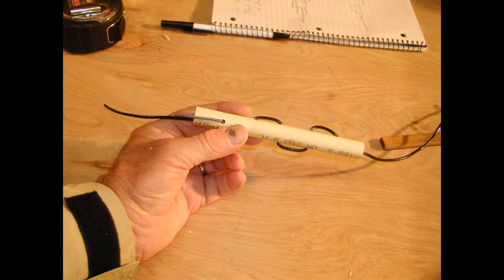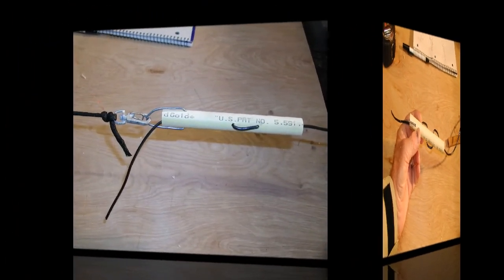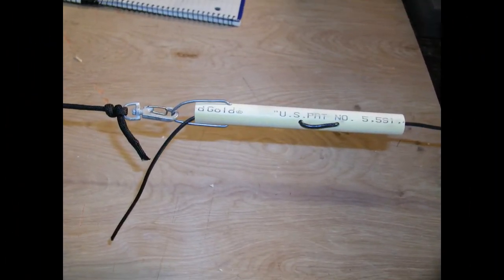Here's a view of the completed end insulator after the antenna wire has been installed. We'll show a couple of views of the completed end insulator with the halyard attached.